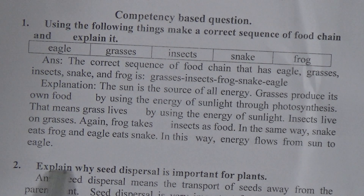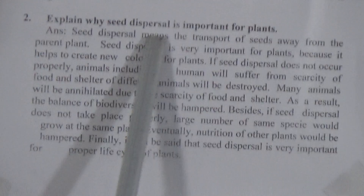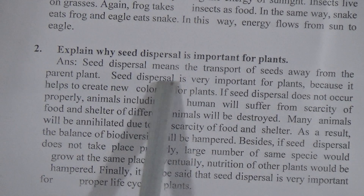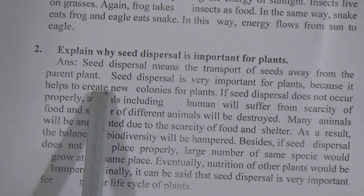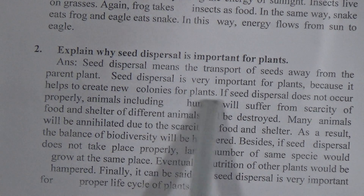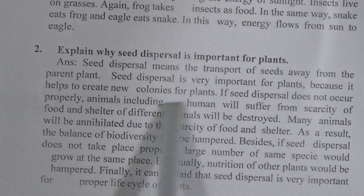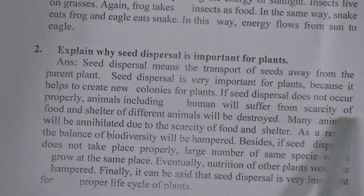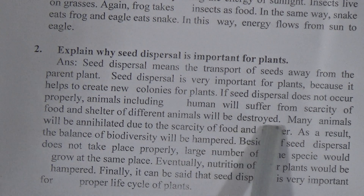The next competency-based question: Explain why seed dispersal is important for plants. The answer is: seed dispersal means the transport of seeds away from the parent plant. Seed dispersal is very important for plants because it helps to create new colonies. If seed dispersal does not occur properly, animals including humans will suffer from scarcity of food, and the shelter of different animals will be destroyed.